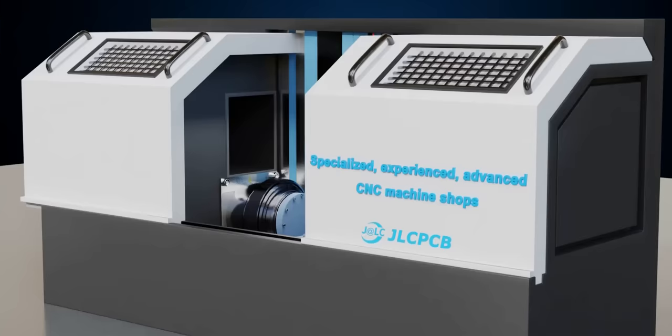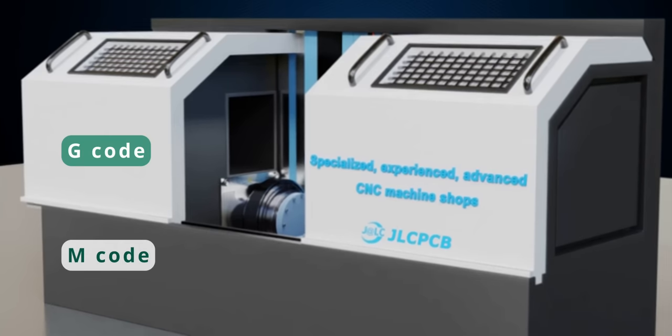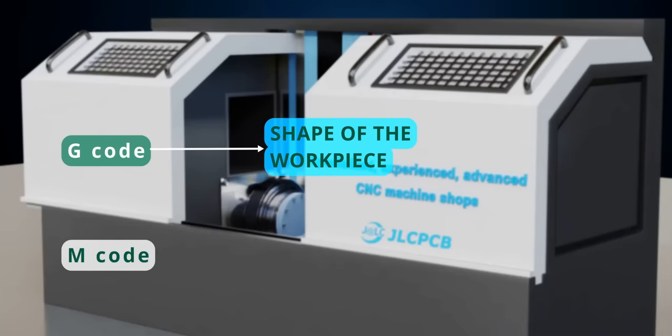Now, let's review some basic information about G and M-codes. First off, G stands for geometry. This means all the information required to achieve the shape of the object is conveyed by the G-code. M, on the other hand, stands for machine.